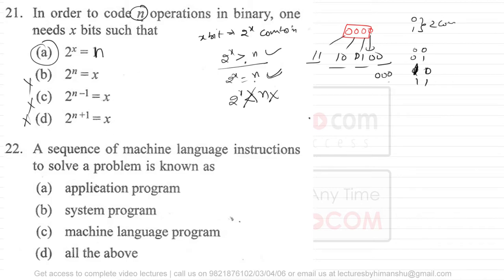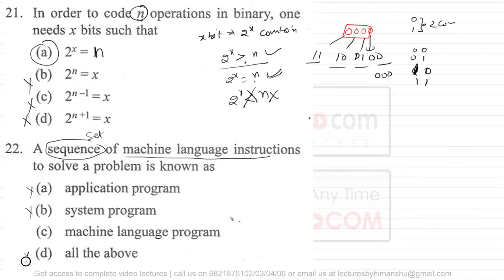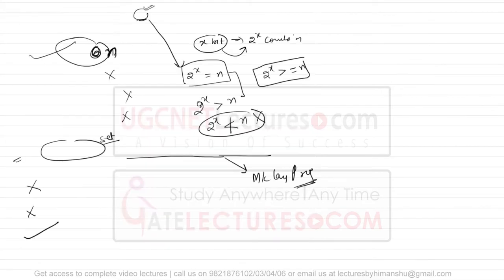Question 22 says: a sequence of machine language instructions to solve a problem is known as... Because it is a sequence of machine language instructions, that makes it a machine language program. Options A, B, and D are not correct. Option C is the correct answer — it is a machine language program, not an application program or system program.